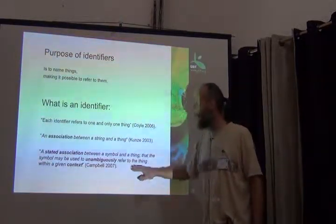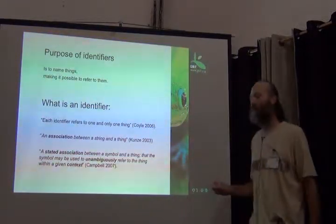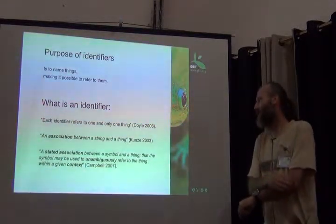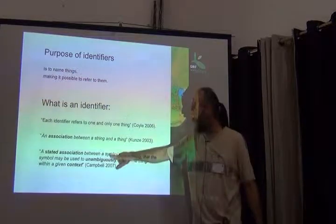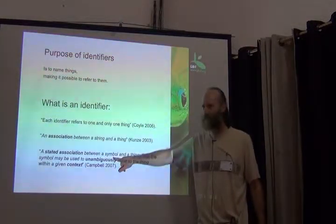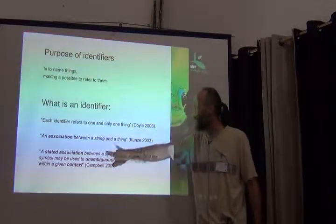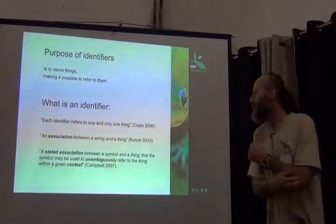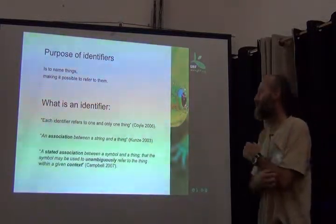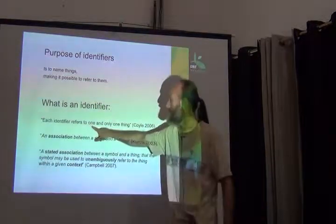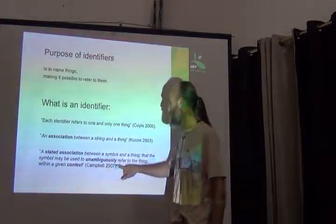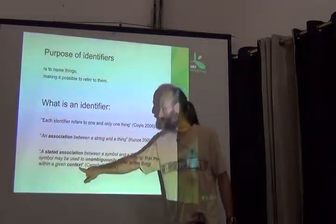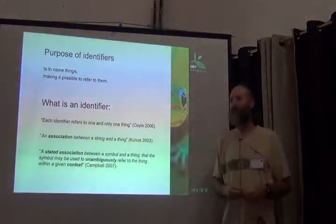Campbell in 2007 tries to get a little bit more rigorous and says: a stated association between a symbol and a thing. So, not necessarily a string, but an association or a relationship. And that symbol may be used to unambiguously refer to the thing — same as before, one and only one, unambiguously refer to a thing.